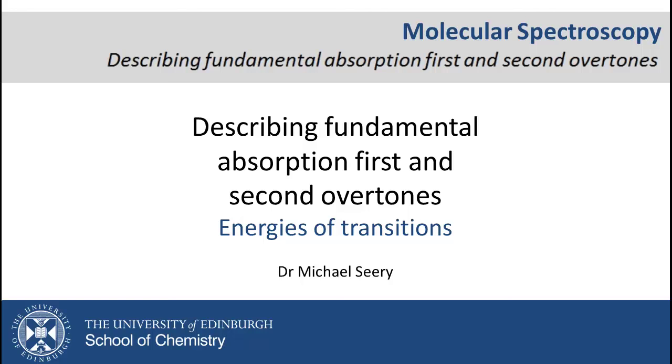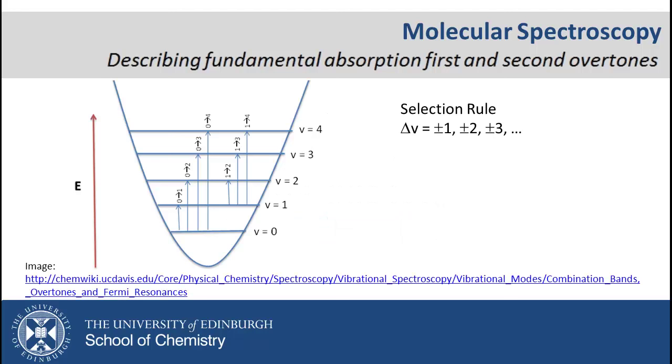While selection rules state that vibrational transitions can involve a change delta V of plus minus 1, 2, 3, etc., in practice there is a very low probability of observing anything beyond the 0 to 1, 0 to 2, and 0 to 3 transitions.